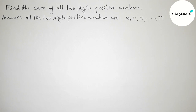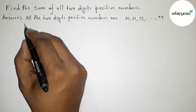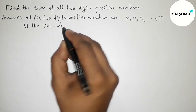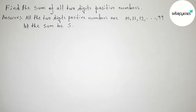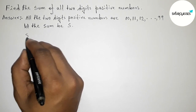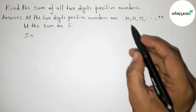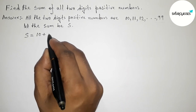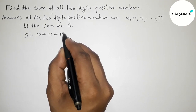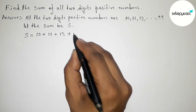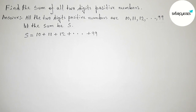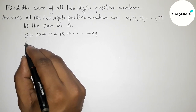Next, taking the sum — let the sum of all two-digit positive numbers be S, where S stands for sum. We can write: S = 10 + 11 + 12 + ... + 99.